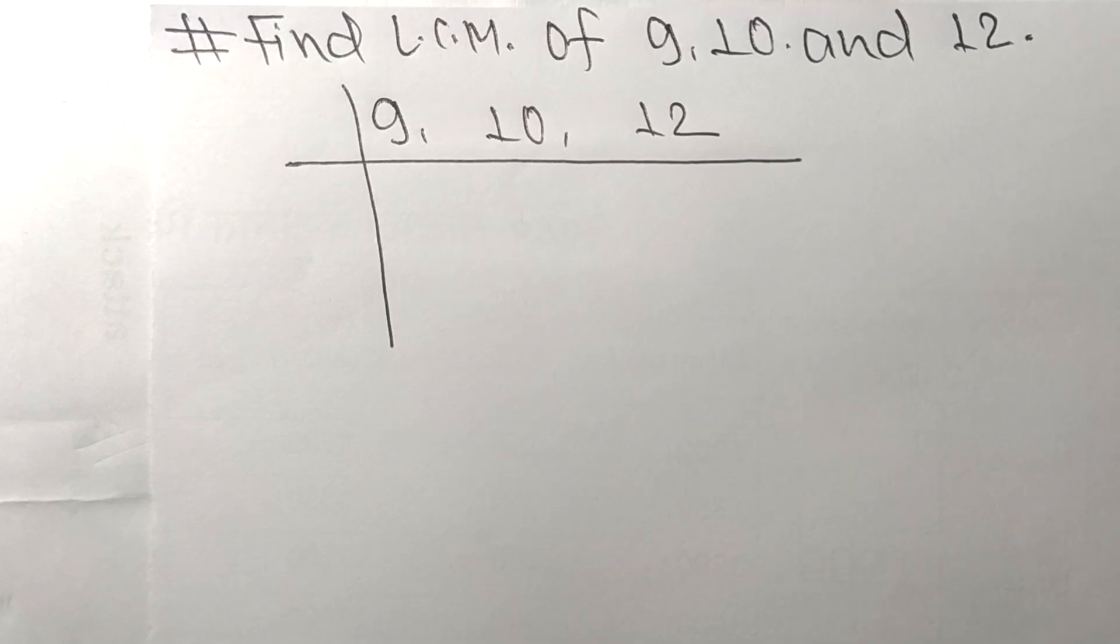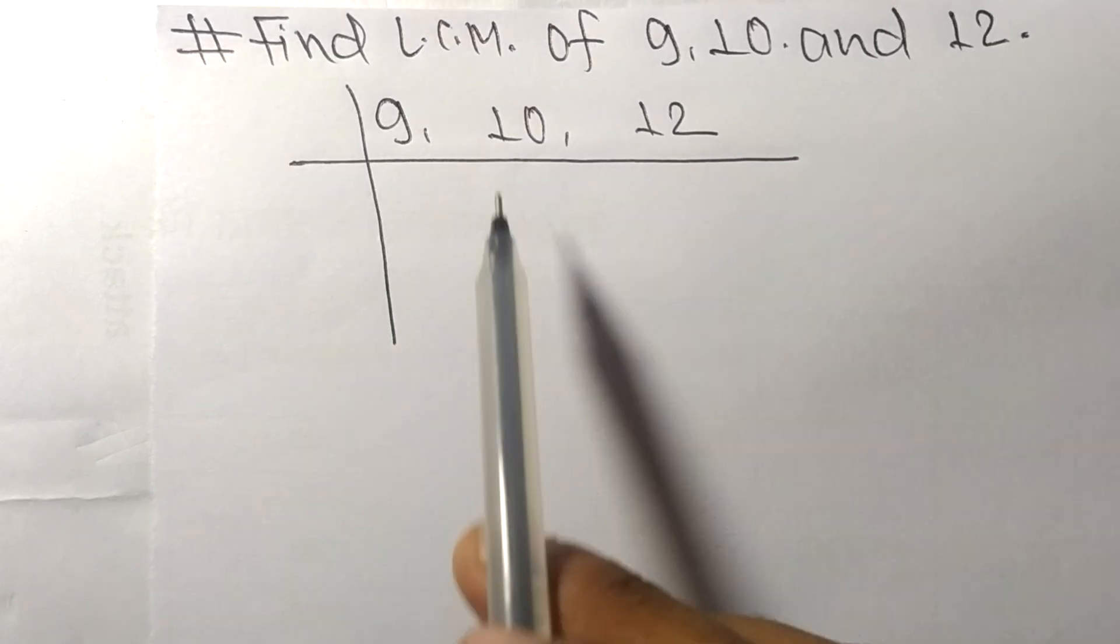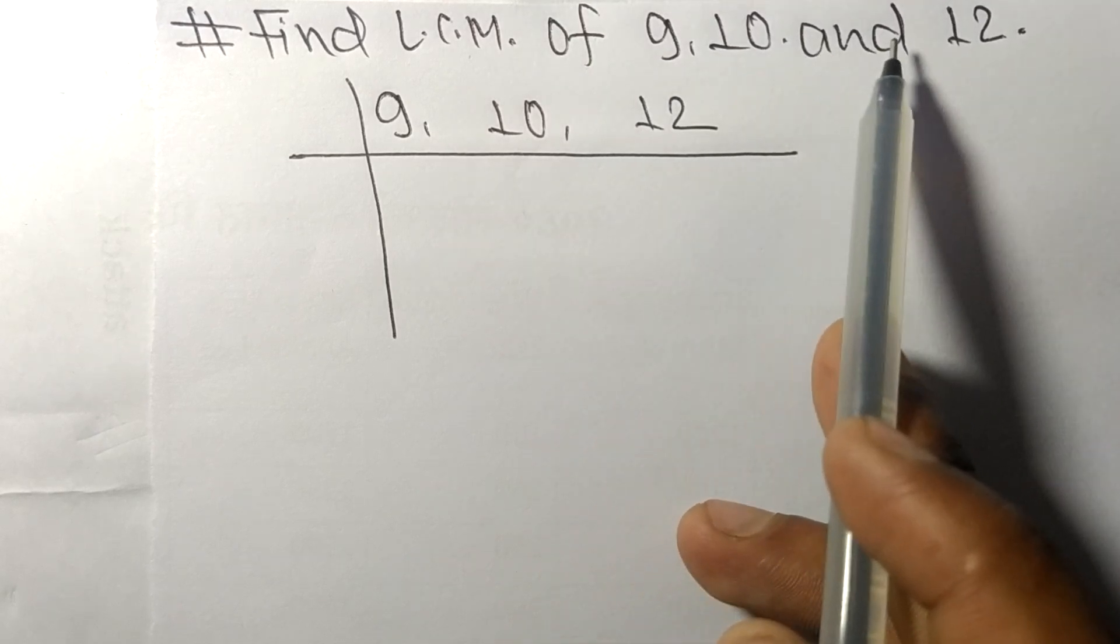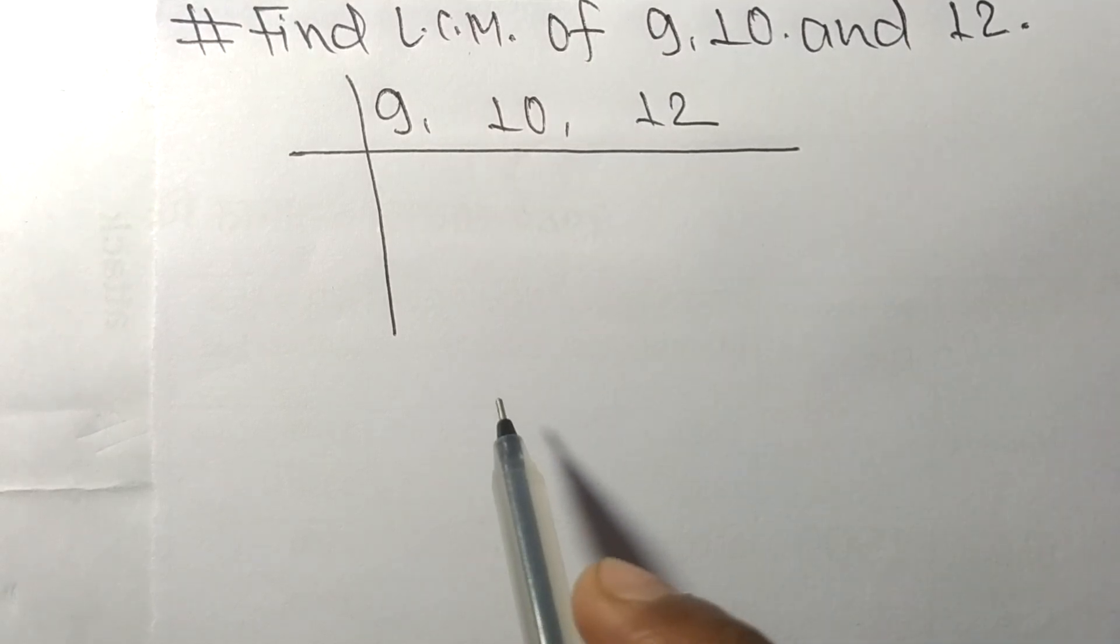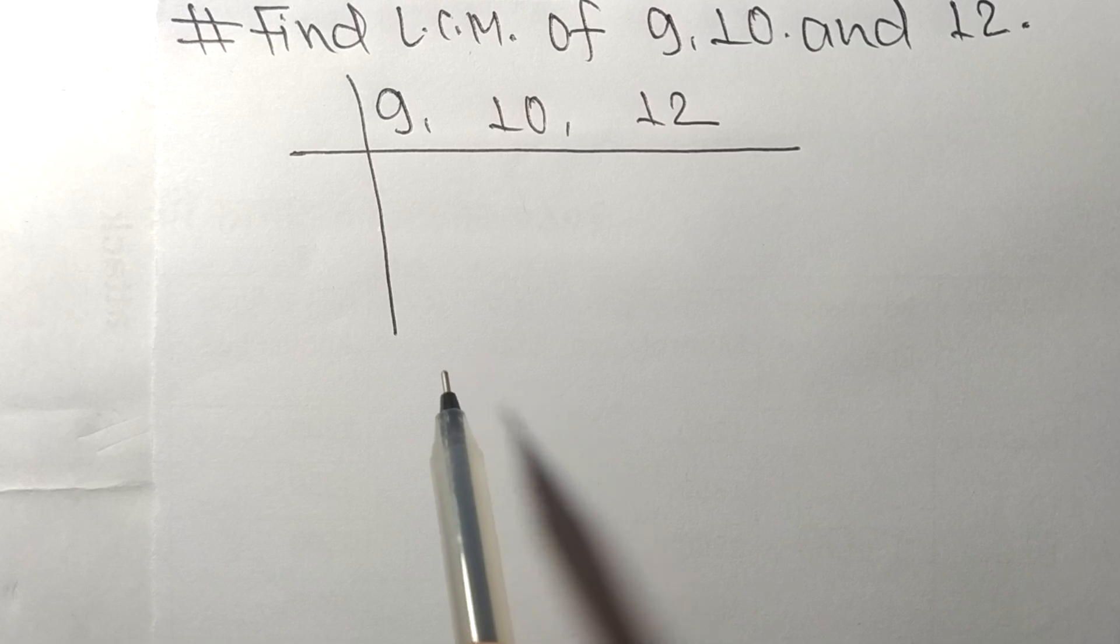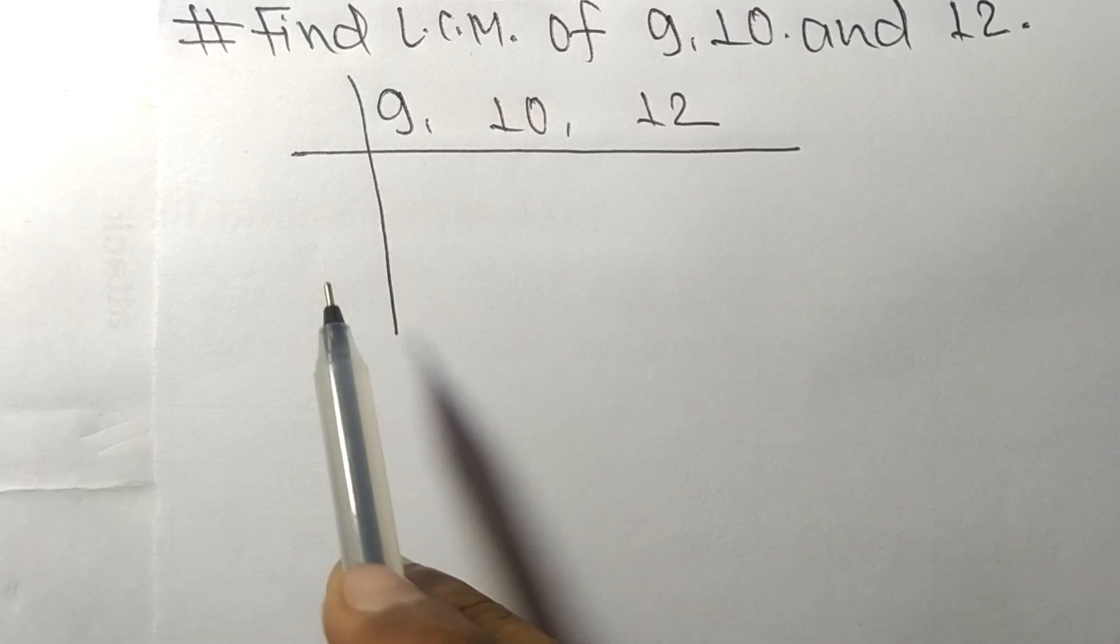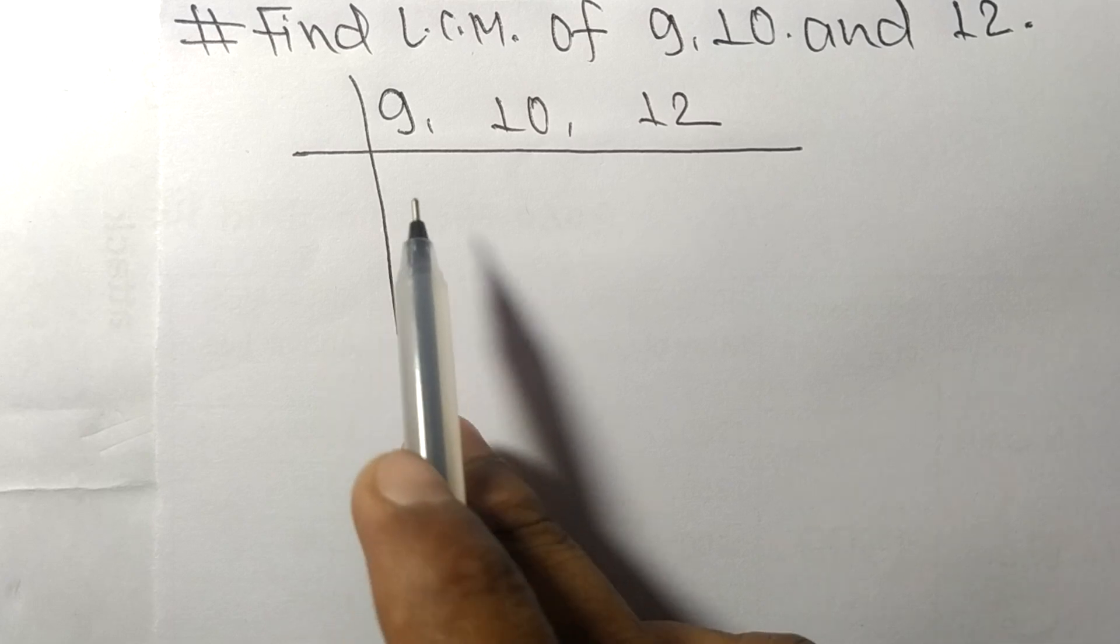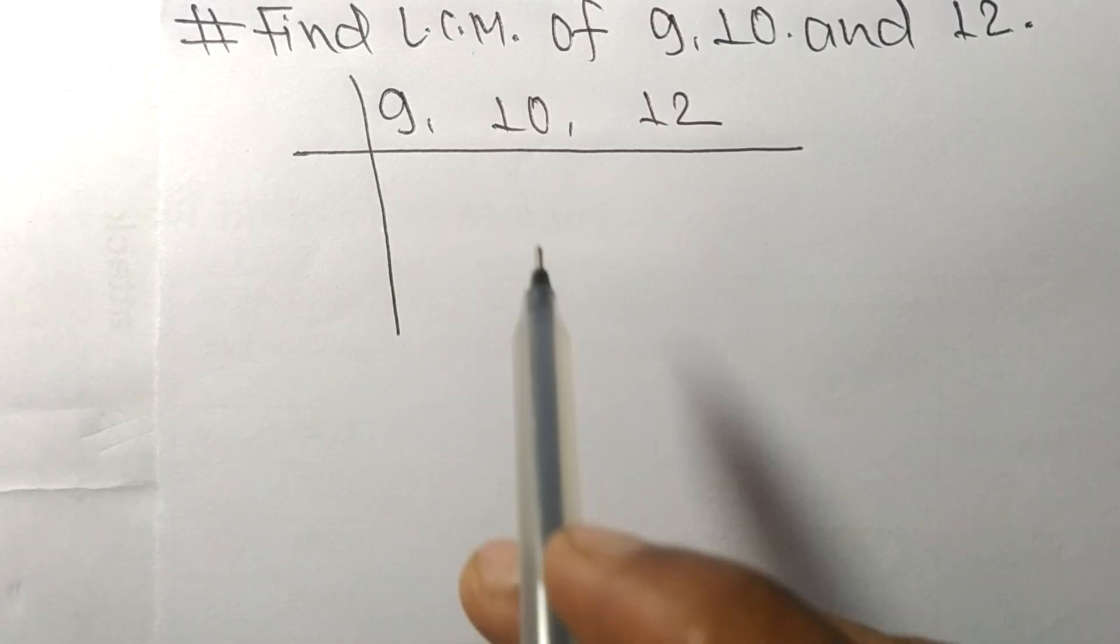Today in this video we shall learn to find the LCM of 9, 10, and 12. To find LCM, we have to choose the lowest number that can exactly divide at least any two of these numbers.